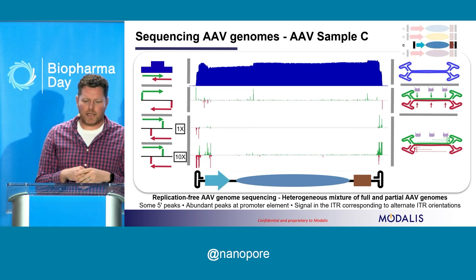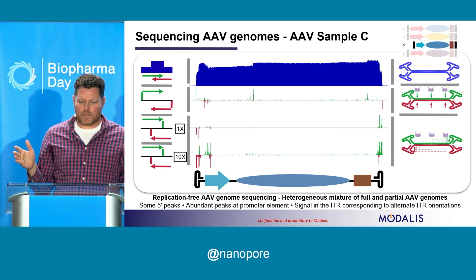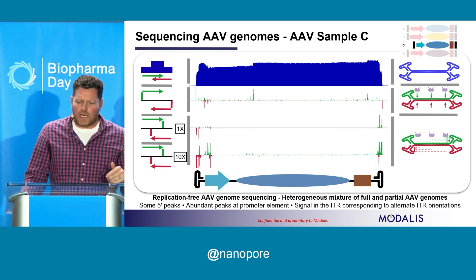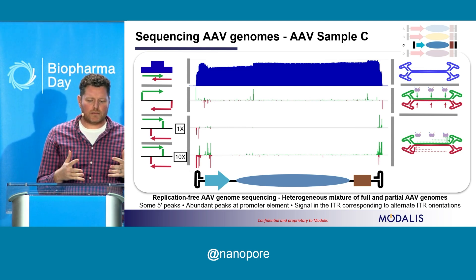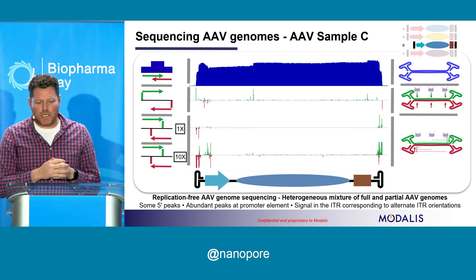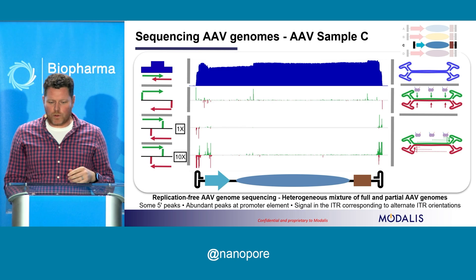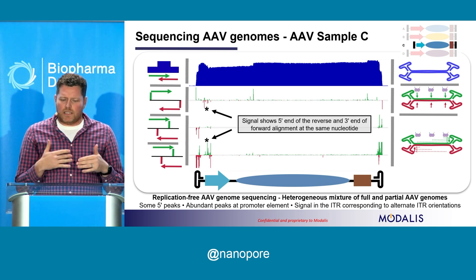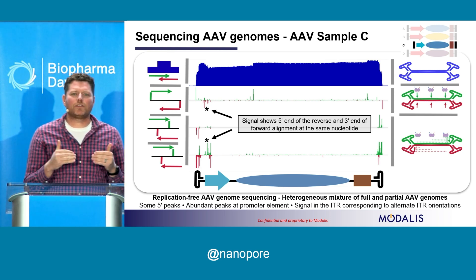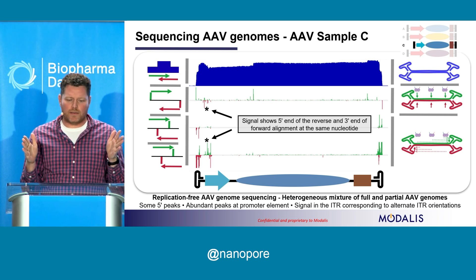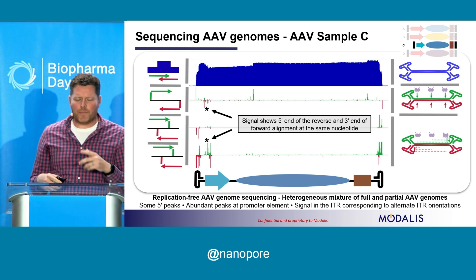Then we took our mixed population and did the same analysis. We got pretty good coverage throughout the length of the genome, but this time at the five-prime end we got a little peak, and at the three-prime end a little bump as well. When we looked at the five-prime ends of the alignments, we see more signal within the promoter region and a couple spots along the way. At the three-prime end, we now see a pretty significant signal in that promoter region when we increase by about tenfold. We wanted to better understand why we were seeing this, and one thing that jumped out was that some signals showed a five-prime end on the reverse strand at the exact same position as the three-prime end of the forward strand.